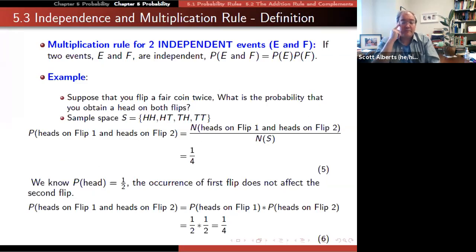For two independent events, we can just multiply them together. Finding that things are independent is actually very handy. So if we say, what's the probability we flip a coin and get heads twice? We know the probability of getting heads once is half. The two coin flips don't talk to each other, right?